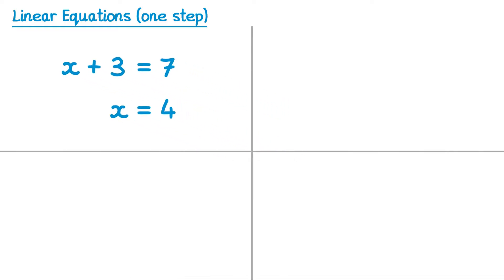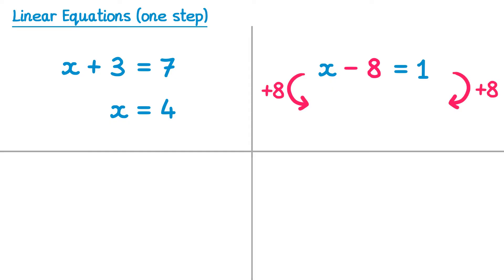There are a few other one-step equations you need to be able to solve. On the left hand side of this equation we have a subtract 8. The inverse or opposite of subtracting 8 is adding 8, so we're going to add 8 to both sides of the equation. On the left hand side the subtract 8 and plus 8 cancel out, leaving just x. On the right hand side we've got 1 plus 8 which is 9. We've now solved the equation: x equals 9.